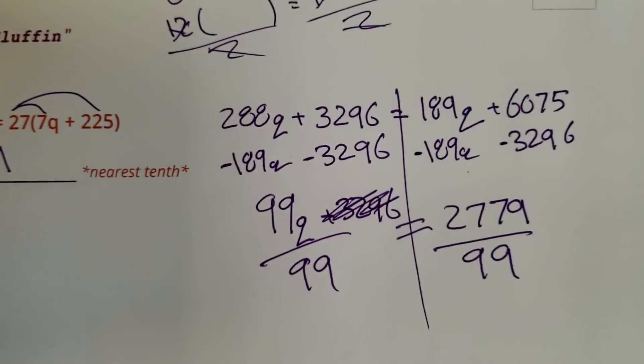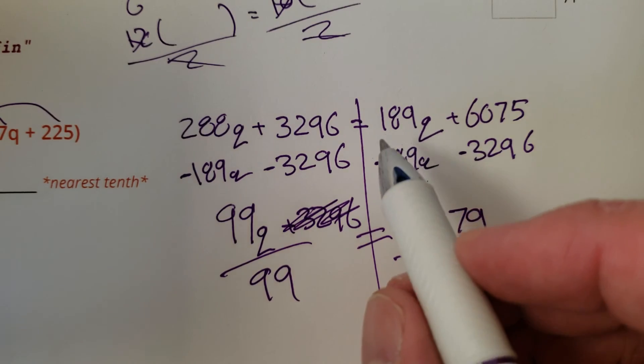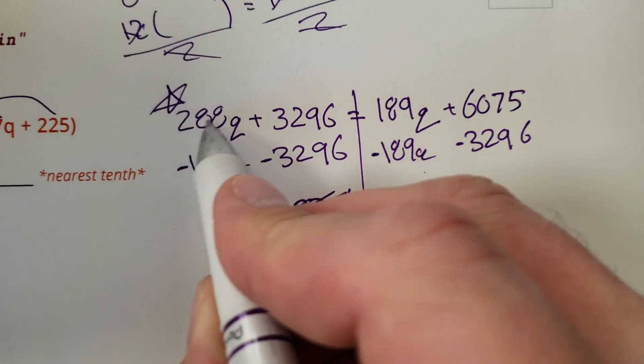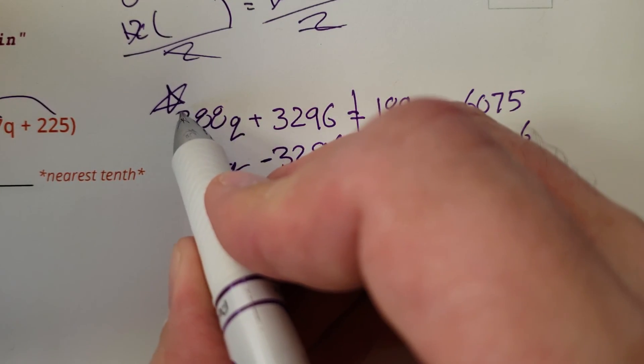Alright, so remember, there is also a shortcut to some of these goofier looking ones. You can just identify the bigger variable. This is the bigger variable. How much more does this variable have? 99.